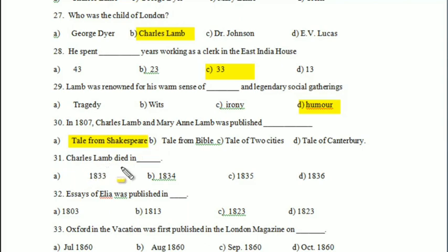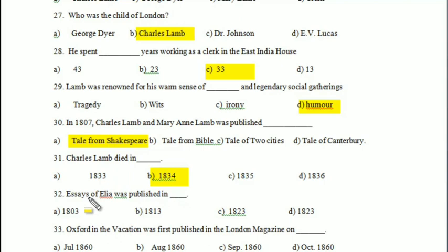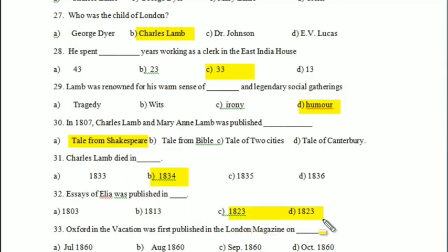Charles Lamb died in — 1833, 1834, 1835, or 1836? Your answer is 1834. Essays of Elia was published in — 1803, 1813, 1823, or 1823? Your answer is 1823.